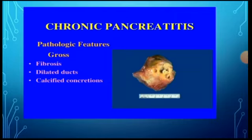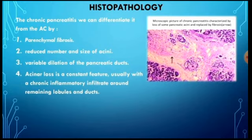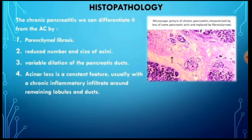In chronic pancreatitis, the gross pathological features include fibrosis, dilated ducts, and calcified parenchyma, as seen in the picture. Histopathologically, chronic pancreatitis is differentiated from acute by: parenchymal fibrosis, reduced number and size of acini, variable dilation of pancreatic ducts, and constant loss of acini — usually with chronic inflammatory infiltrate around remaining lobules and ducts. The microscopic picture shows loss of some pancreatic acini replaced by fibrosis.